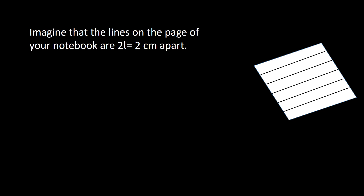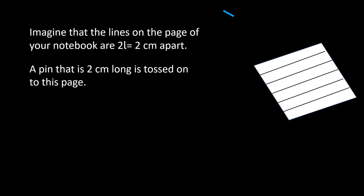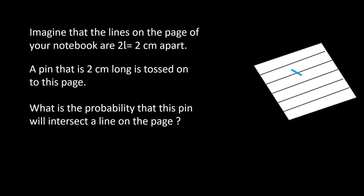Imagine that your notebook contains horizontal lines which are at a separation of 2 centimeters from one another. For ease, we will represent this 2 centimeter length as 2L, which means L is 1 centimeter. Now you have a pin which is 2 centimeters long and you just toss it onto the page of your notebook. The pin lands on the notebook but it can fall in any orientation, so we have to find what is the probability that this pin will intersect a line on the page.